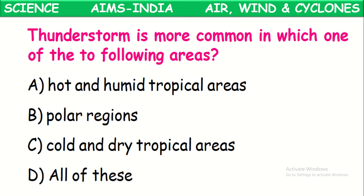Thunderstorms are more common in which area? These are mostly observed in hot and humid tropical areas. Thunderstorms occur most commonly in those areas.